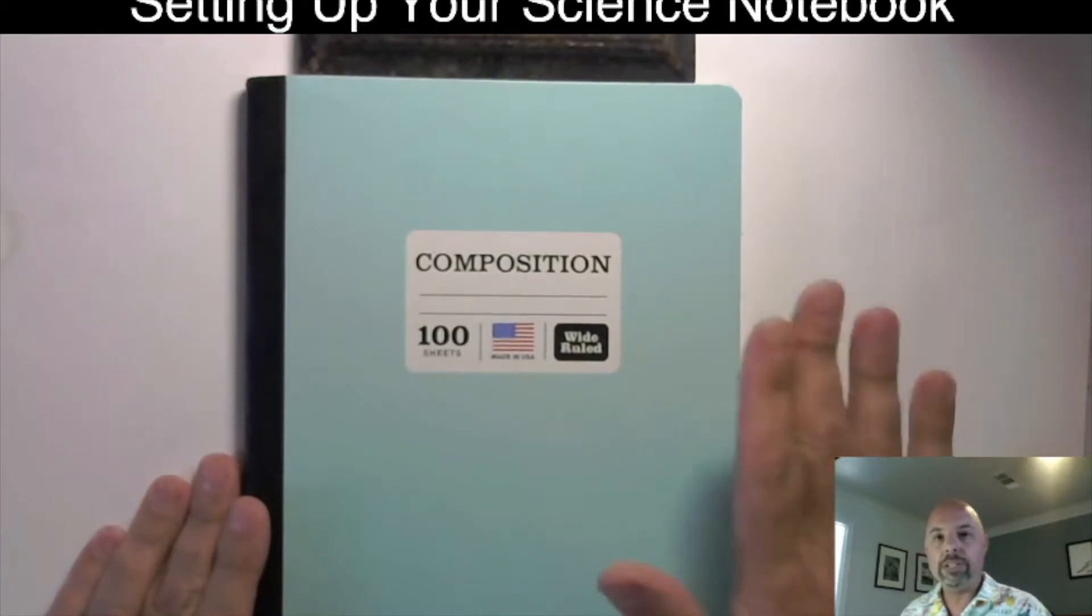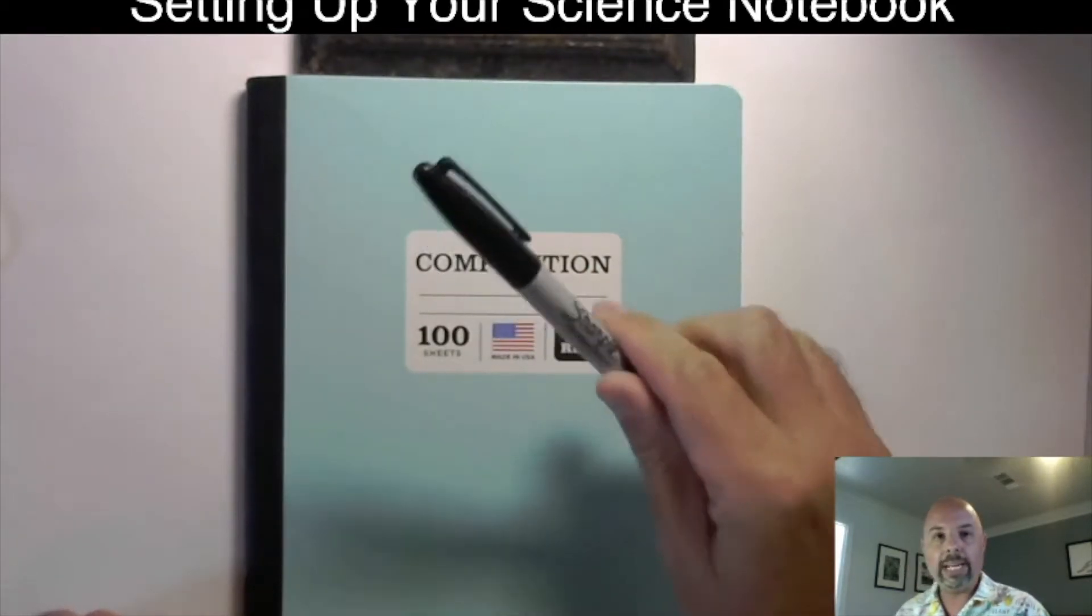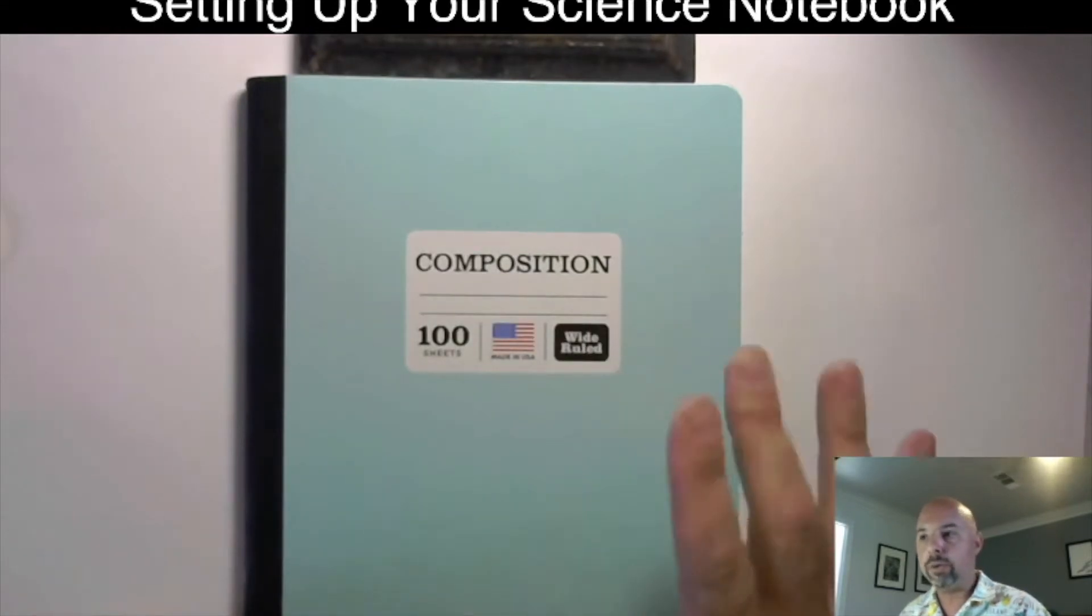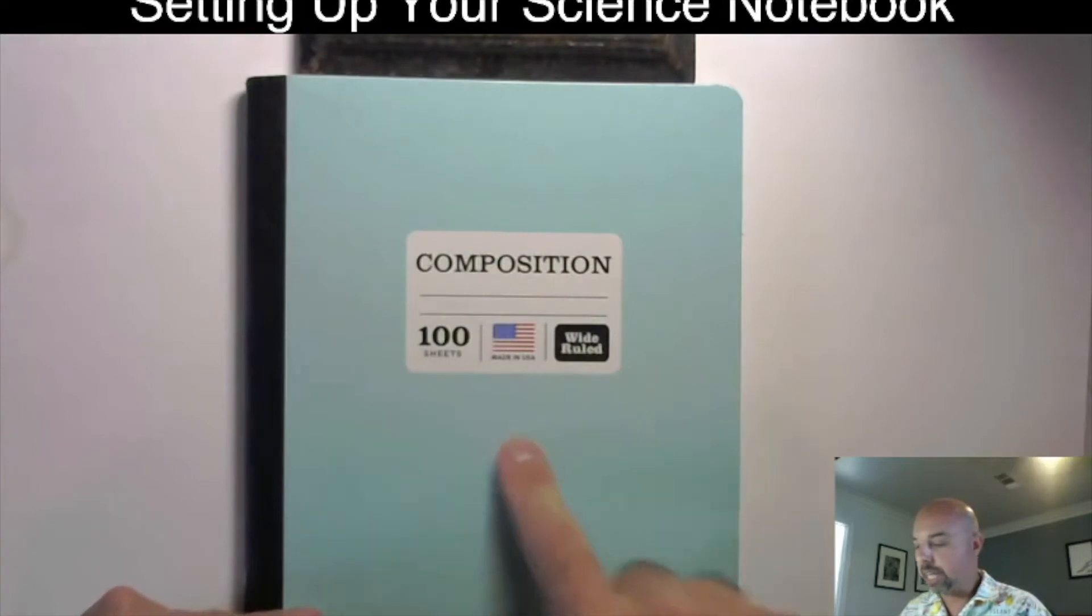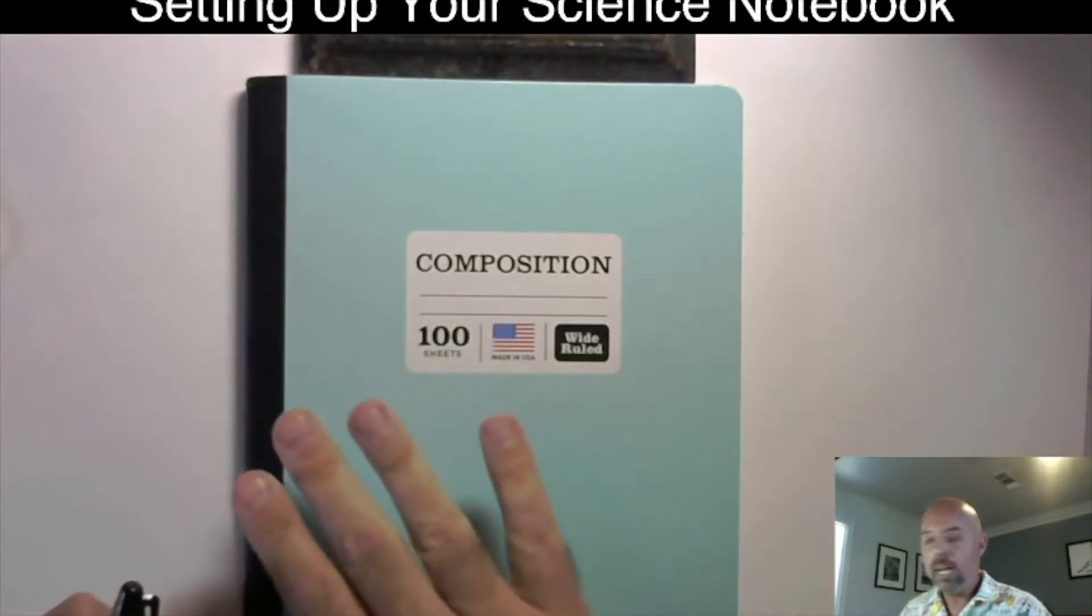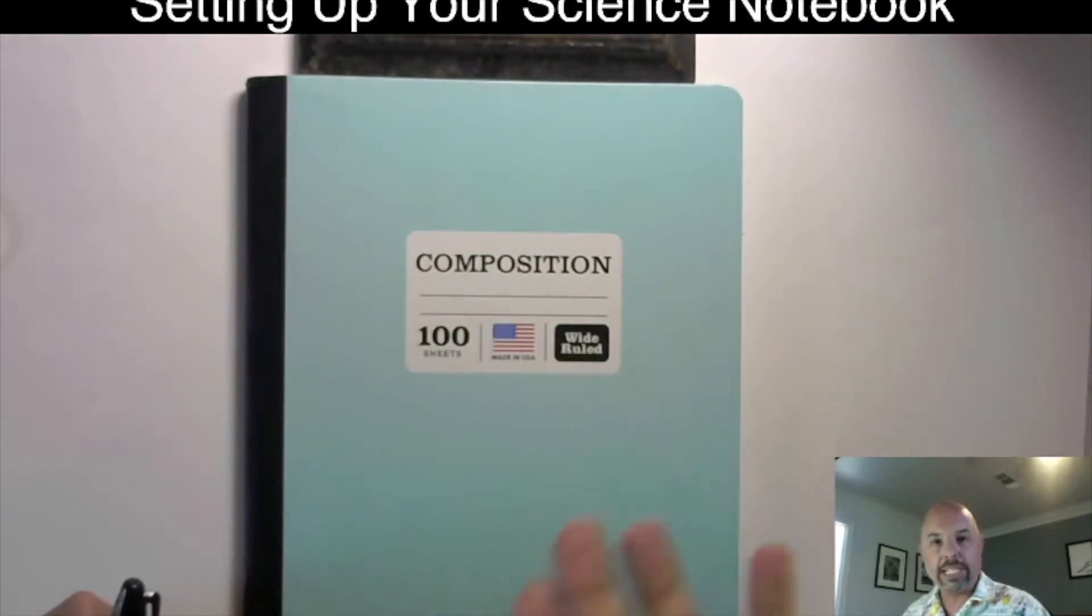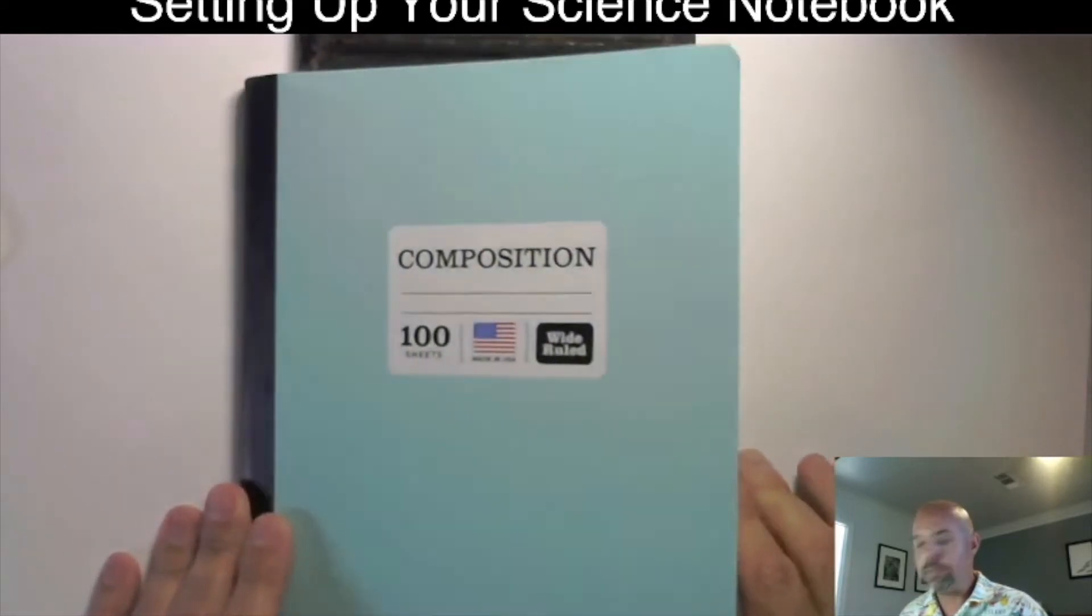One of the things that you might want to do is get yourself a nice big Sharpie or something and just put somewhere across the top or somewhere on the cover the course number. So EED 3315, Your Name, Science Methods. So that way when you see this sitting there or somebody else sees this sitting there, it's very clear what this book is for.